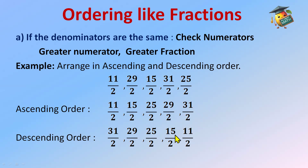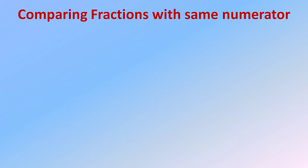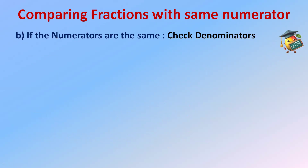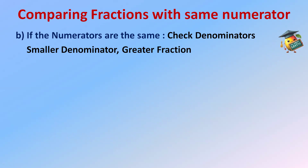Now let's move to comparing fractions with the same numerator. In this case, the numerators are the same — these are not like fractions — but we still have a rule. If numerators are the same, we check the denominators. The rule here is: smaller the denominator, greater will be the fraction.